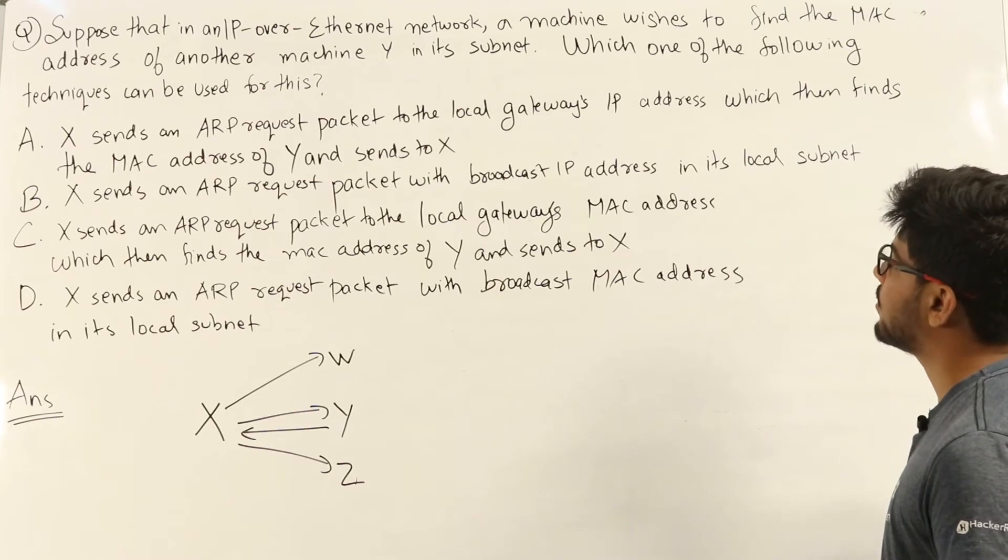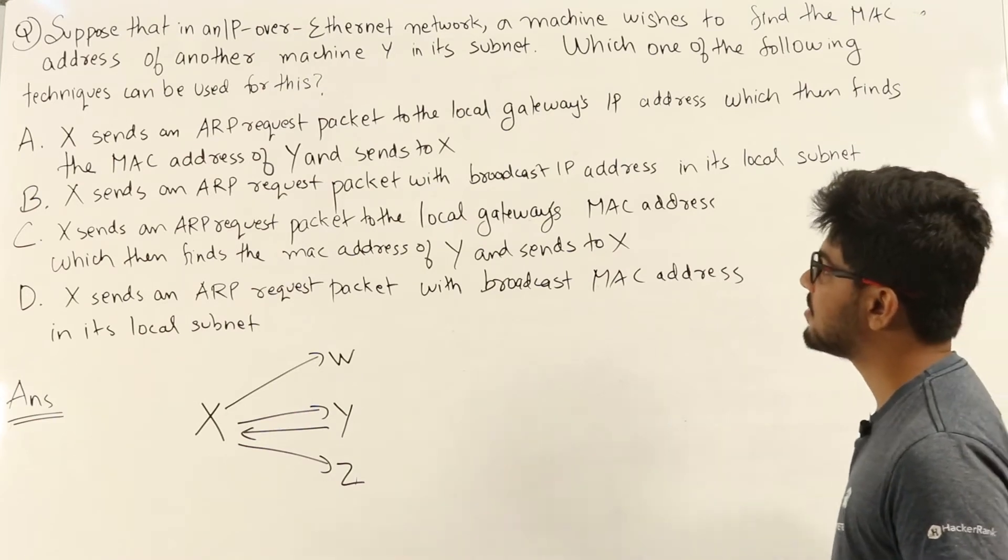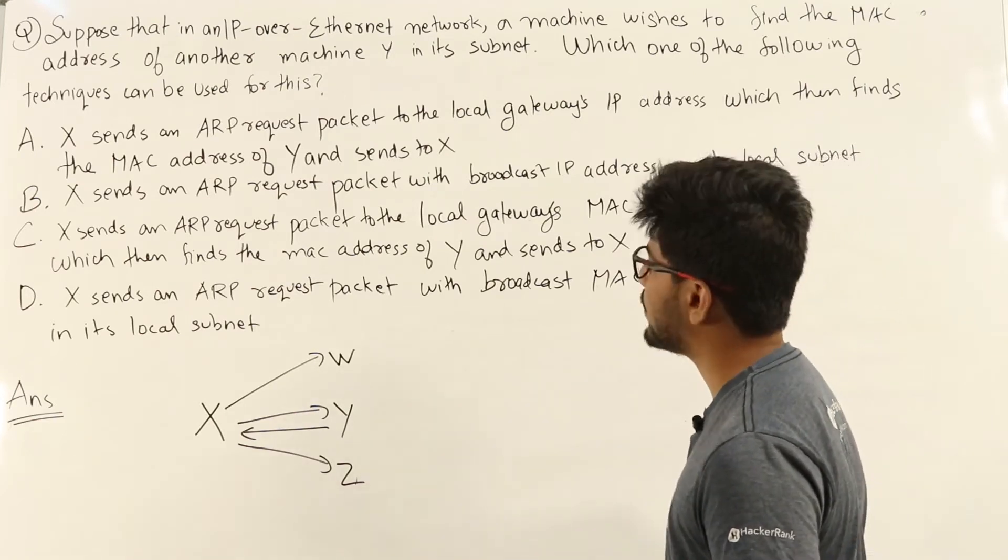C. X sends an ARP request packet to the local gateway's MAC address which then finds the MAC address of Y and sends to X.